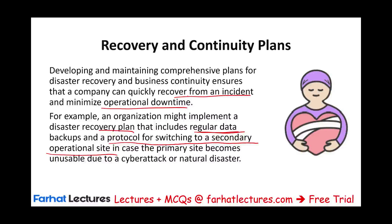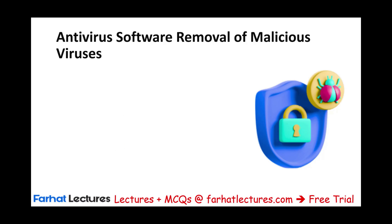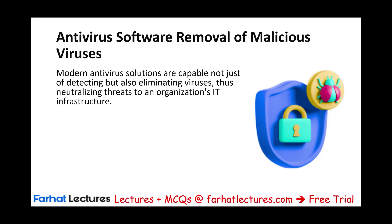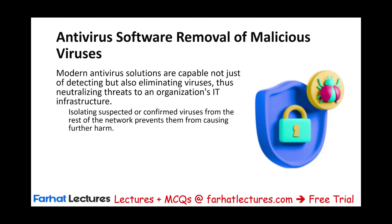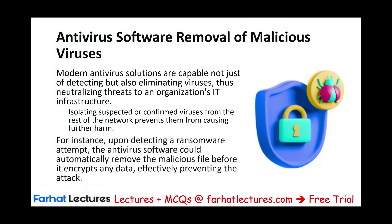Making sure our antivirus software is properly working is also part of corrective controls. We talked about antivirus software earlier as a detective measure, but once a problem is detected, we need to eliminate it — that is the corrective action. We need to eliminate the virus, neutralizing the threat, and isolate any suspected or confirmed viruses from the rest of the network. For example, once we detect a ransomware attempt, the antivirus software would automatically remove the malicious file before it encrypts any data. Yes, we can detect, but removing it is a corrective action — thus preventing further attack.